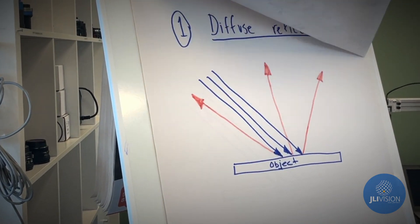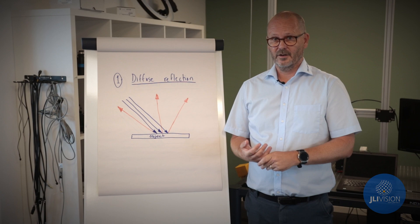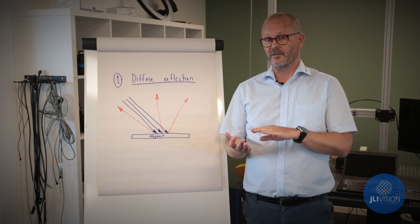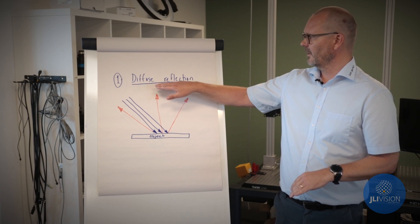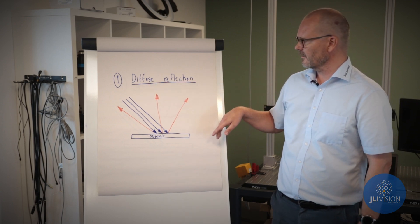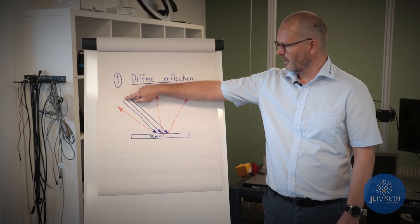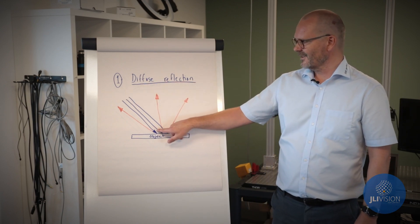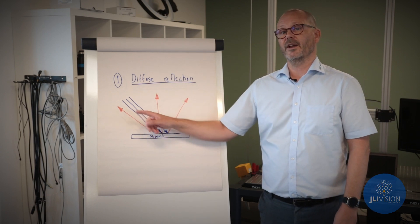If we look at the optical properties of an object, this is also mainly in three points. One is what we call diffuse reflection. If you have an object, you have light coming in. This light will diffuse, it will reflect in any given direction.